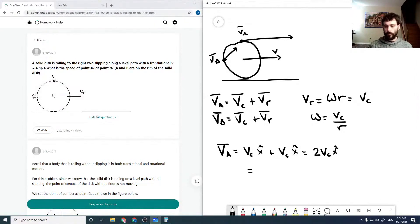We're given in the question that's 4 meters per second, so that would be 2 times 4 meters per second, which equals 8 meters per second X hat.